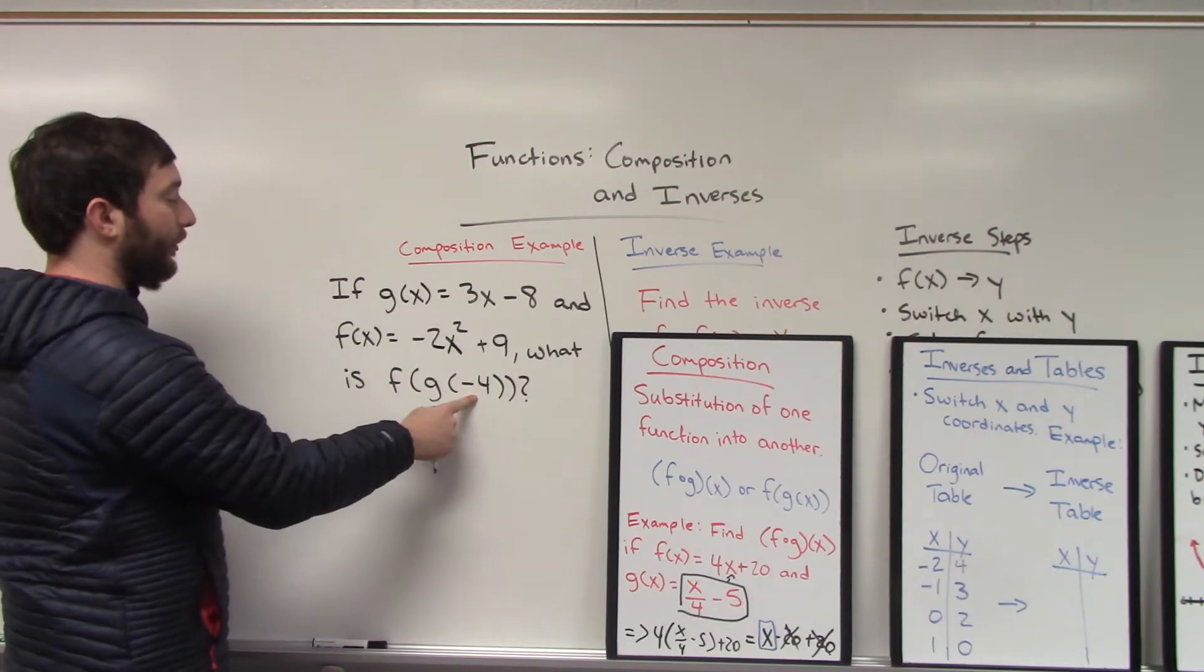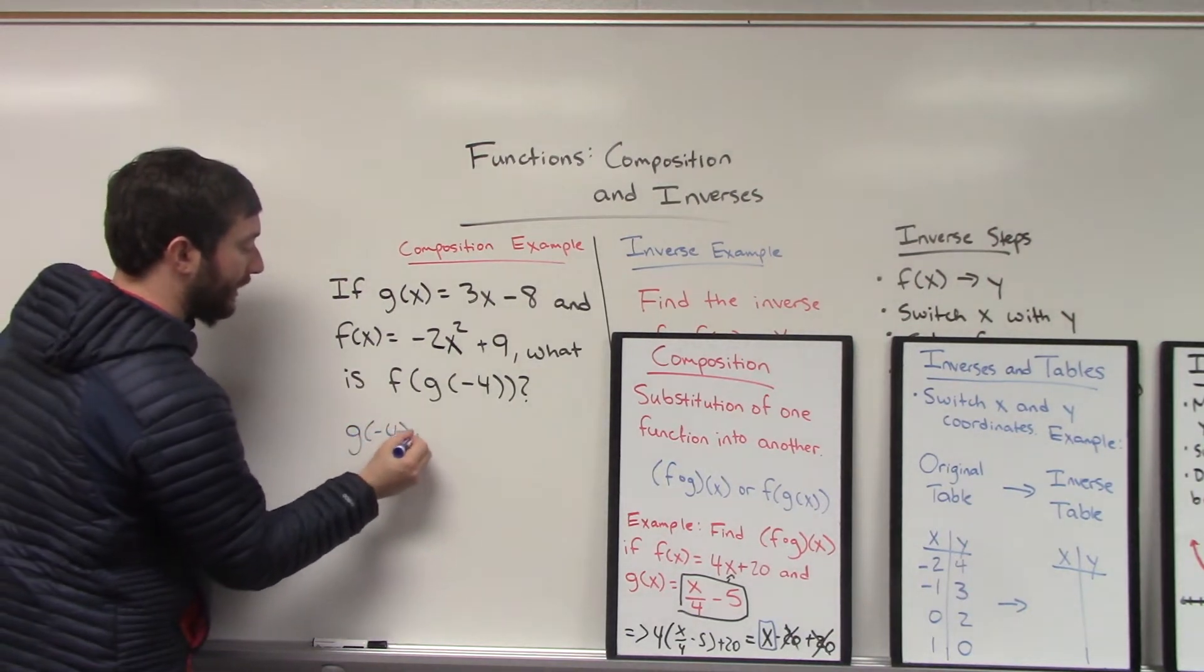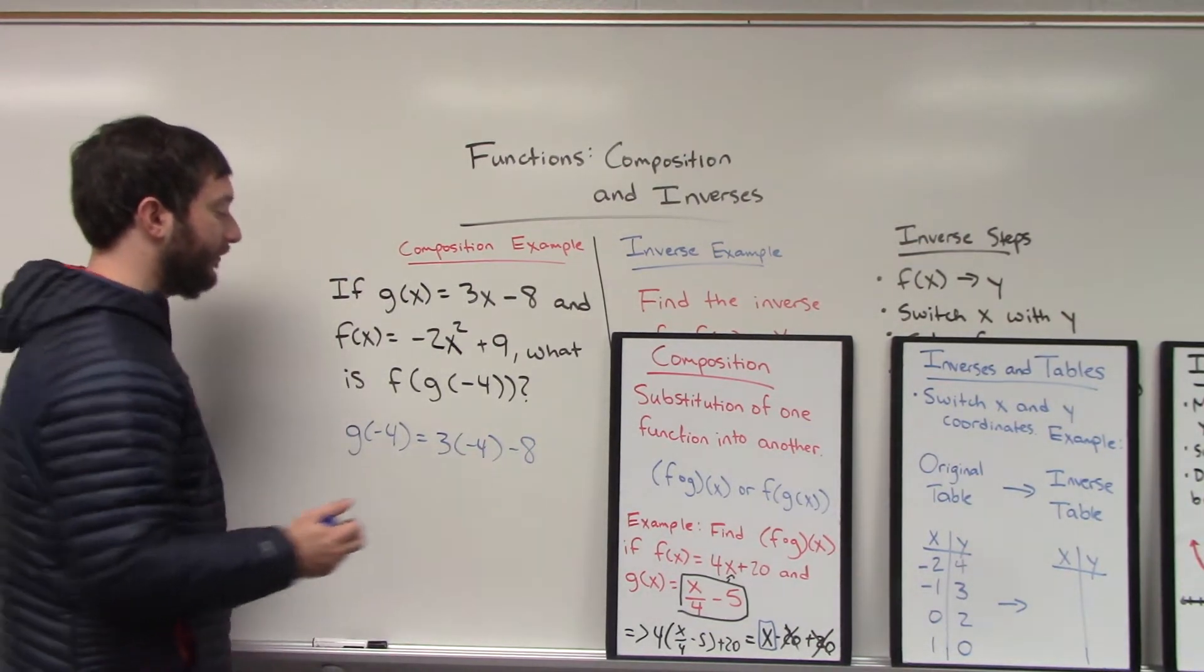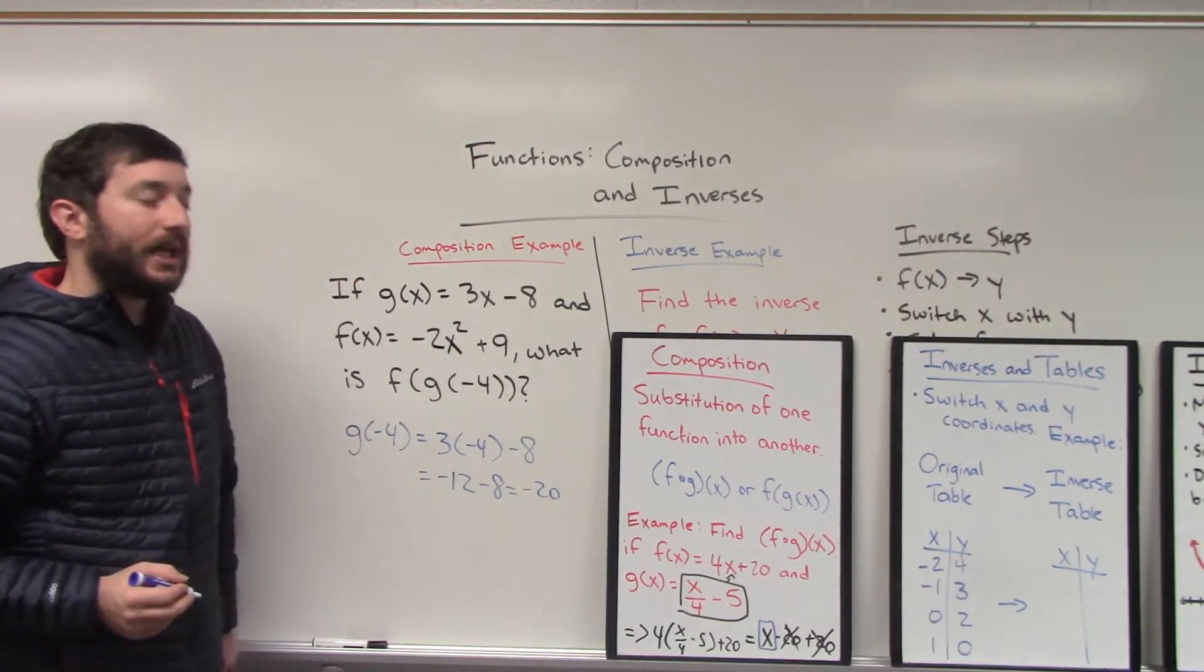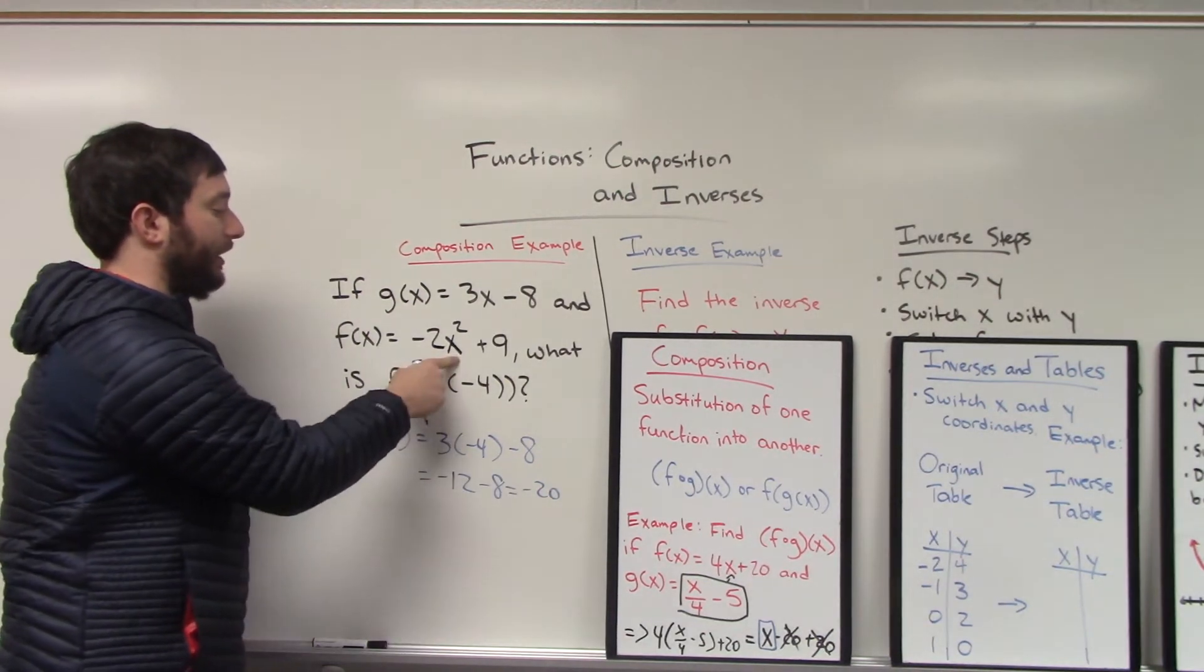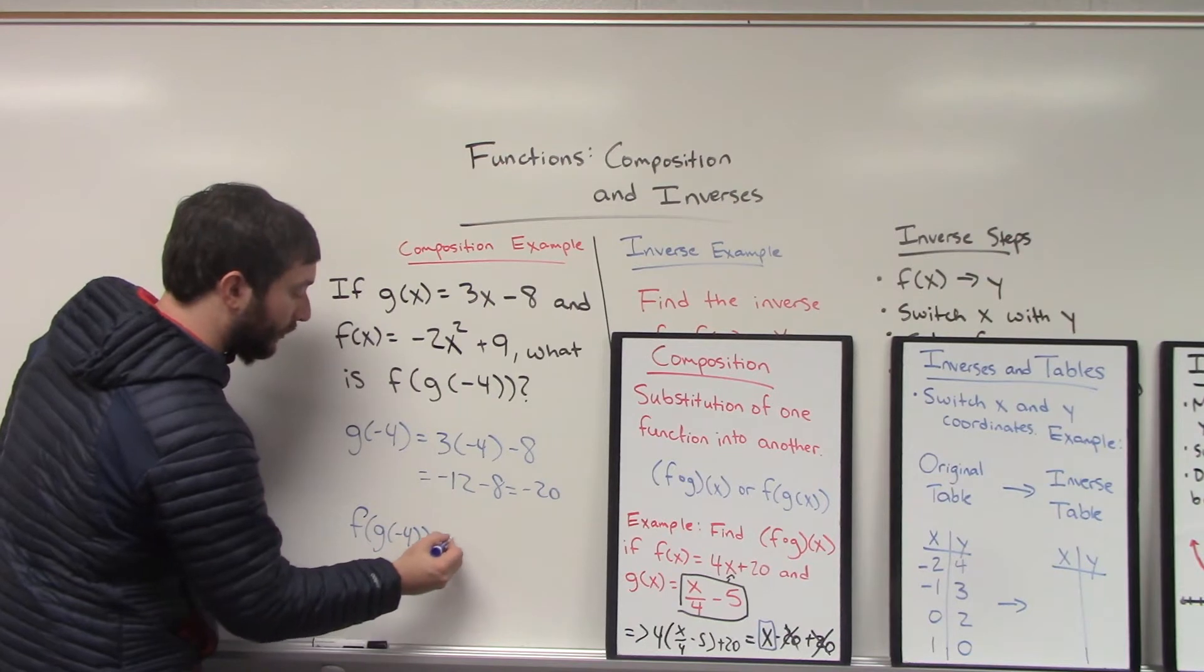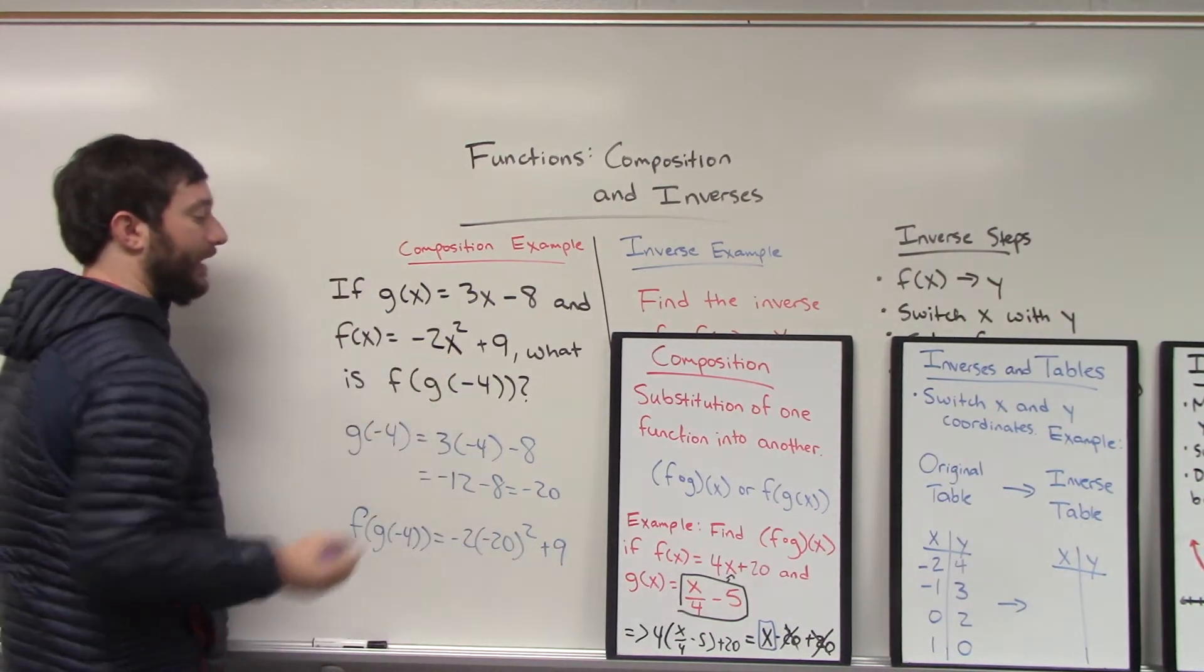So how will that look? If I plug negative 4 into g, it's variable, this is something that you probably have done back in algebra 1. Plugging negative 4 into your variable here will be a simple problem where we have to multiply 3 times negative 4 to get negative 12. And negative 12 minus 8 is negative 20. What we're going to do next, because we found g of negative 4, but remember, we're supposed to now substitute that into f's variable. So we want to take that negative 20, plug it into x here, so that f of g of negative 4 will equal -2 times (-20) squared plus 9. Again, that negative 20 replaced x.